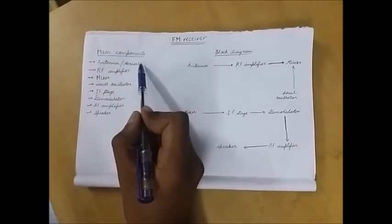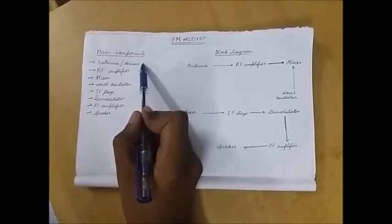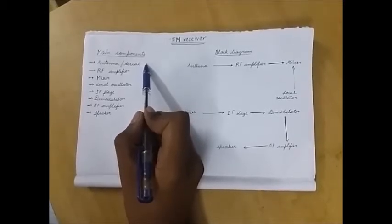Now one by one I will explain the function of every component. First one is antenna. It receives the EM waves and converts them to electrical signals and transfers it further.